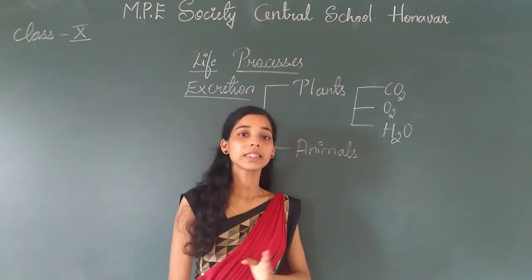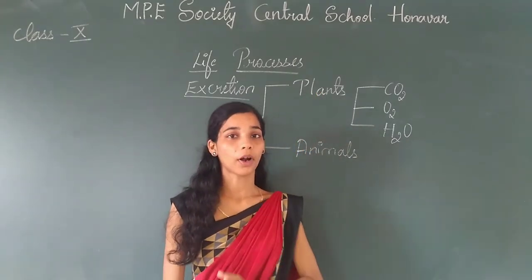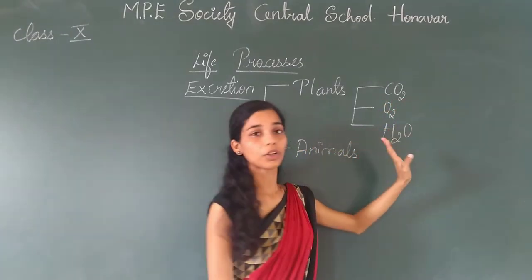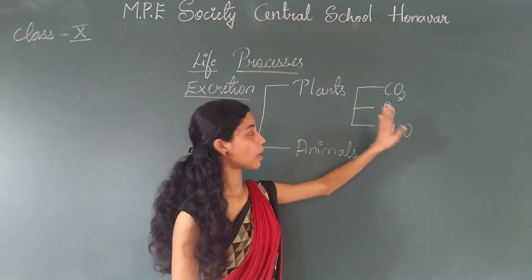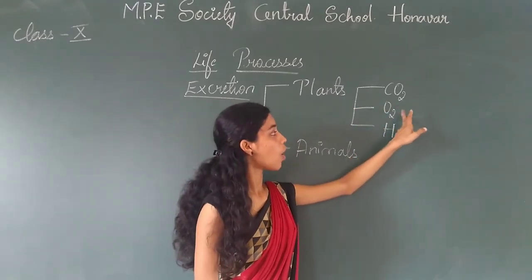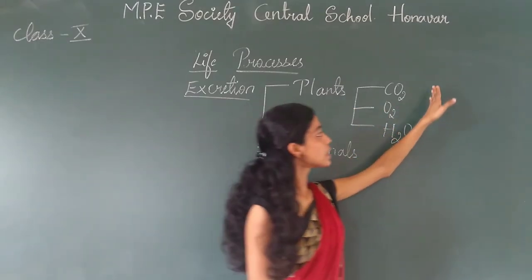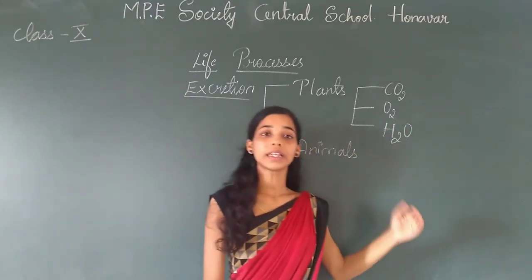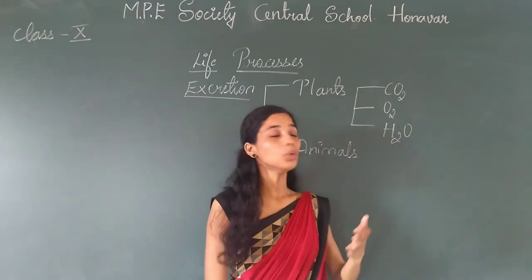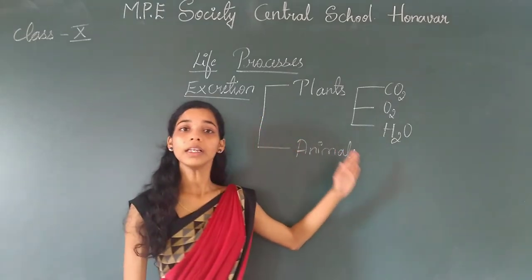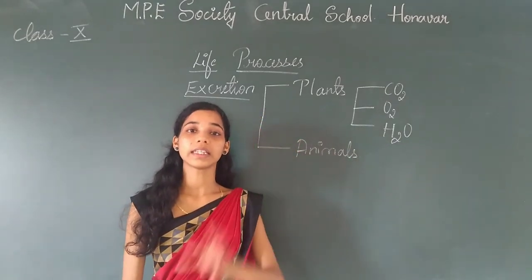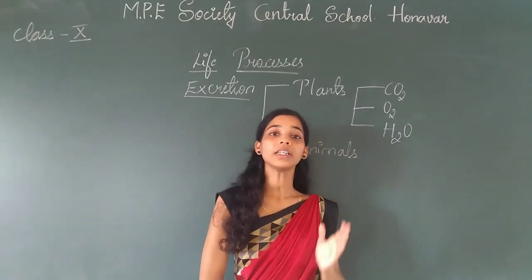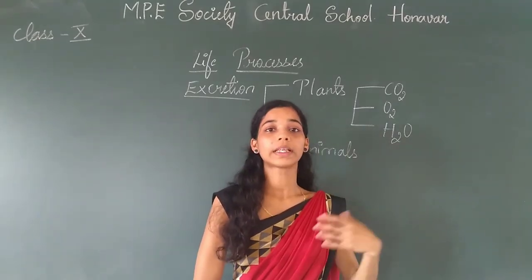In plants, the major excretory products are carbon dioxide, oxygen, and water. These three major excretory products of plants are excreted from the plant body through stomata in the leaves and lenticels in the stems. Plants do not have a specialized organ for excretion.